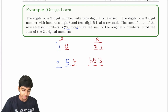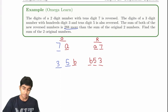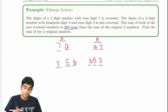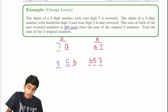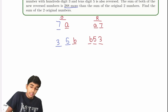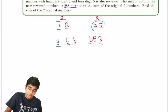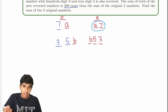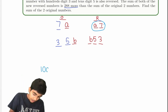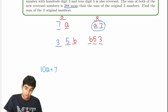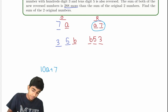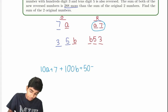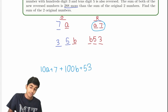We're given that the sum of both of the new reverse numbers is 288 more than the sum of the original two numbers. So B53 plus A7 is 288 more than the sum of the original two. What is the two-digit number expressed algebraically? 10A plus 7. What about the three-digit number? That's 100B plus 50 plus 3, or combined, 100B plus 53.